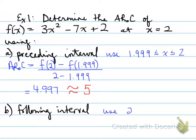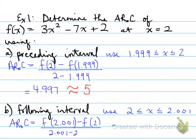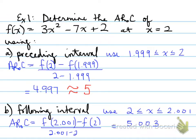For the following interval, we're going to use 2 and 2.001, because we're looking for a number following the given value. So the average rate of change is f at 2.001 minus f at 2, divided by 0.001. Once you plug it into your calculator, you get 5.003, which is approximately equal to 5 as well.